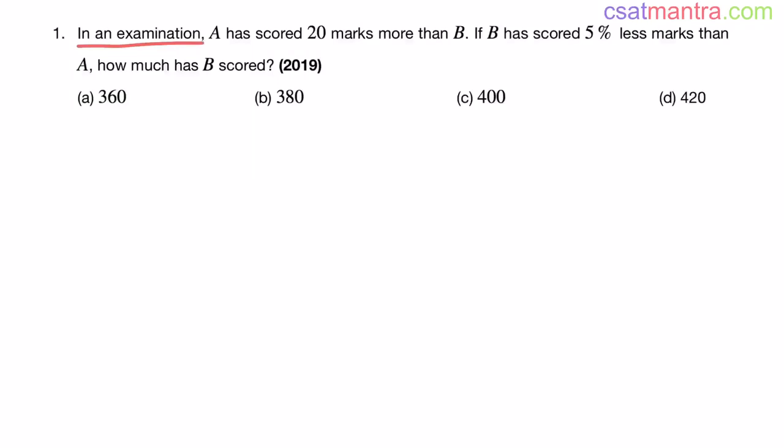In an examination, A has scored 20 marks more than B. If B has scored 5% less marks than A, how much has B scored? This question was asked in 2019 from the percentages chapter.